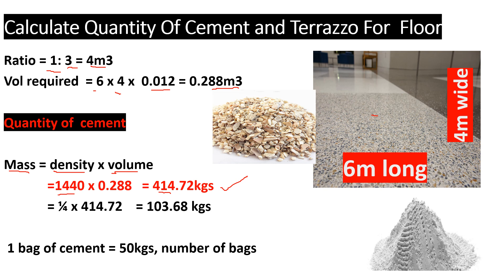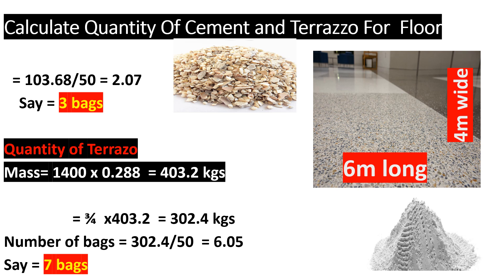Since cement has a ratio of one out of the total four, we take one over four times 414.72 kg, giving us 103.68 kg. Since one bag of cement contains 50 kg, we divide 103.68 by 50, giving us 2.07 bags. So you can say approximately three bags of cement.